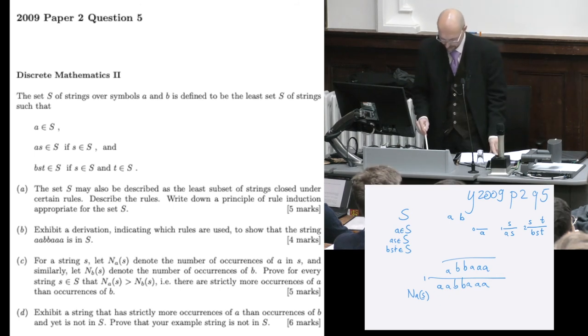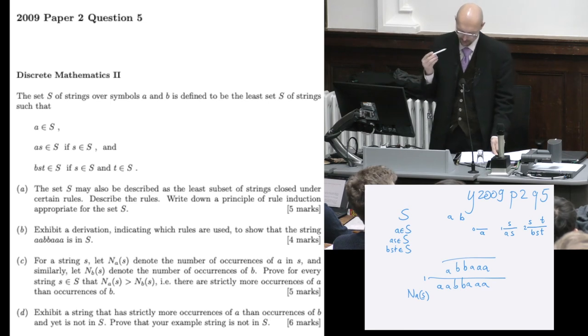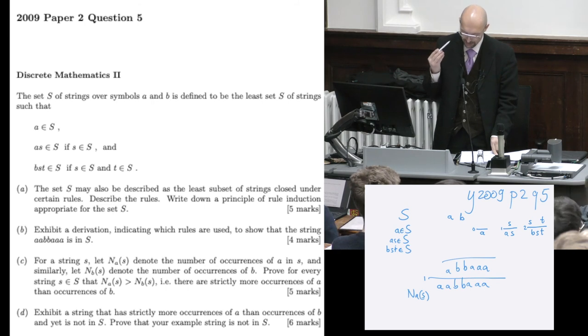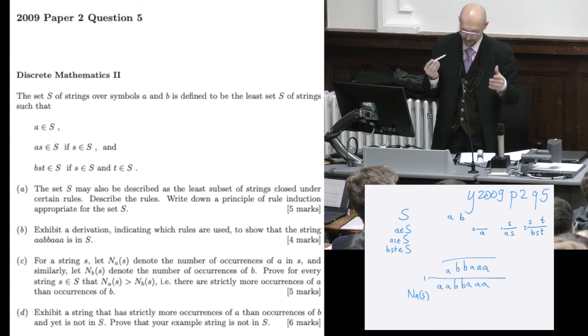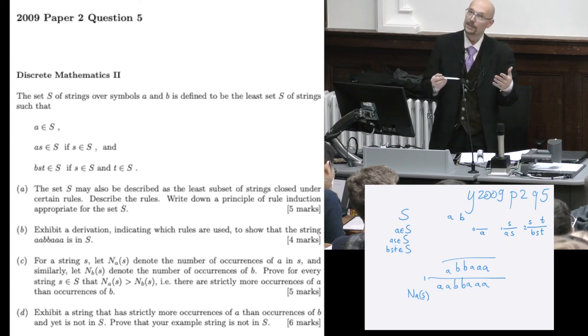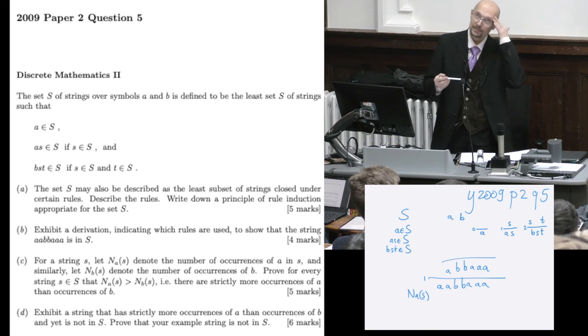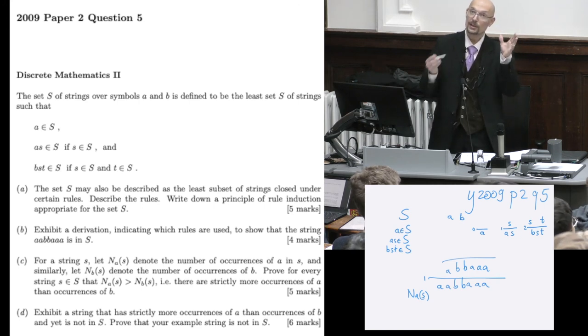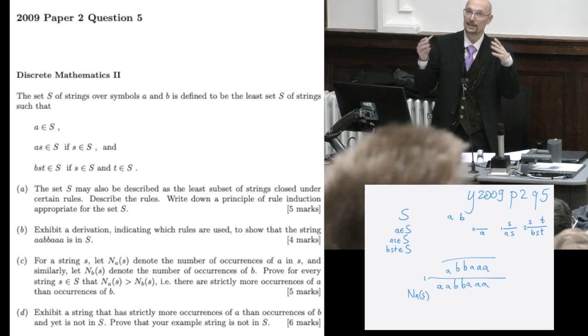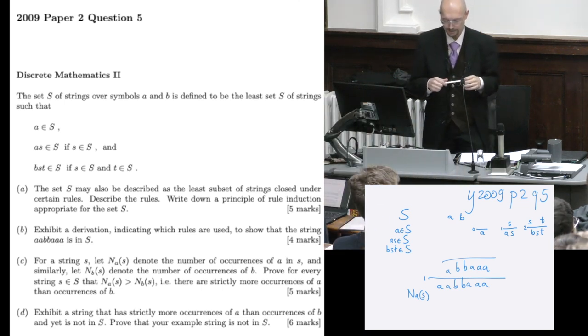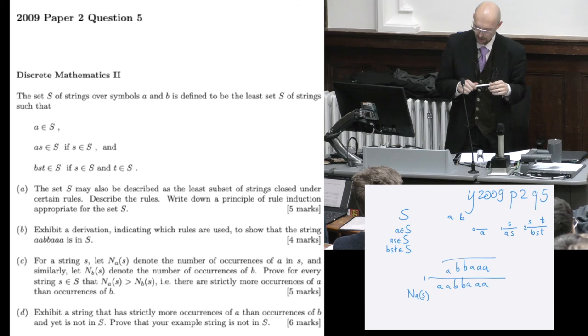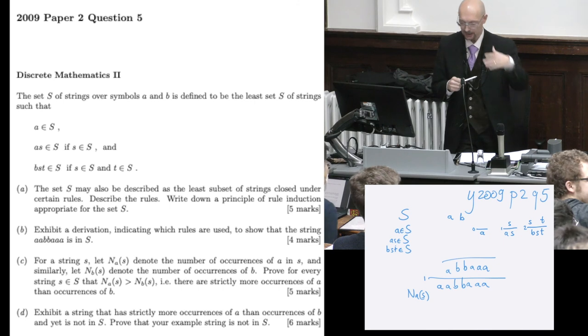And the rest of the question, you would get the remaining six marks by exhibiting a string that has strictly more occurrences of A than occurrences of B, and yet is not in S. So that's just to prove the fact that in that theorem, the inductively defined subset was included in S, in a set that was closed under the rules, but it was not necessarily equal to it. So it was the smallest such subset.